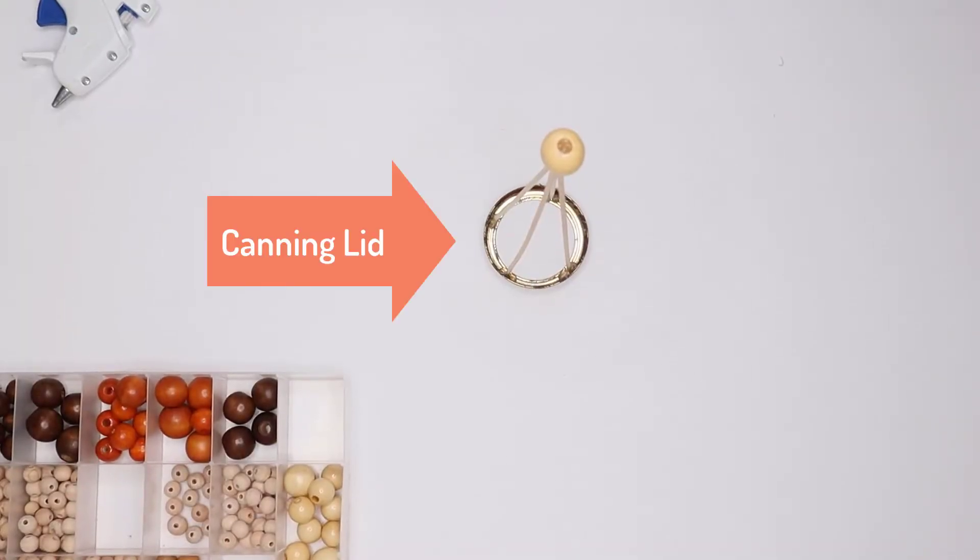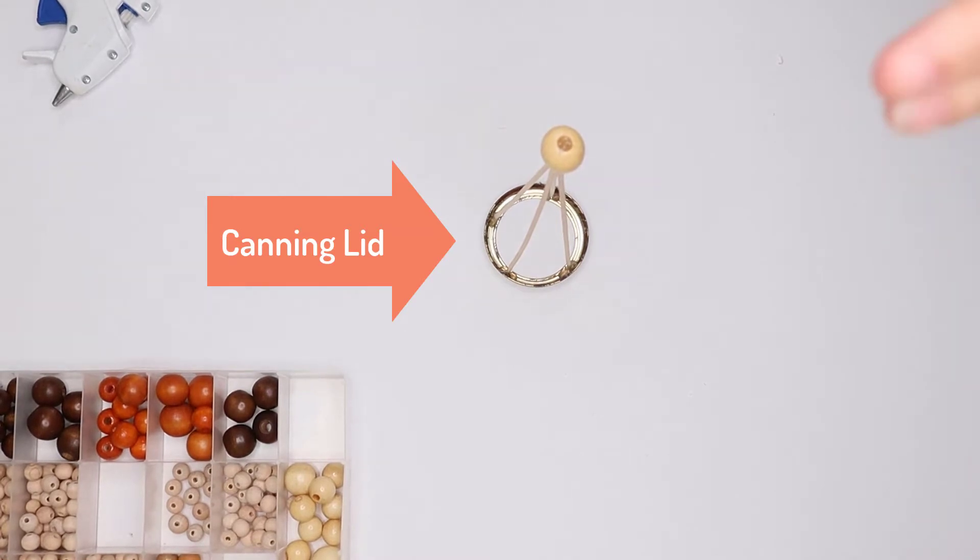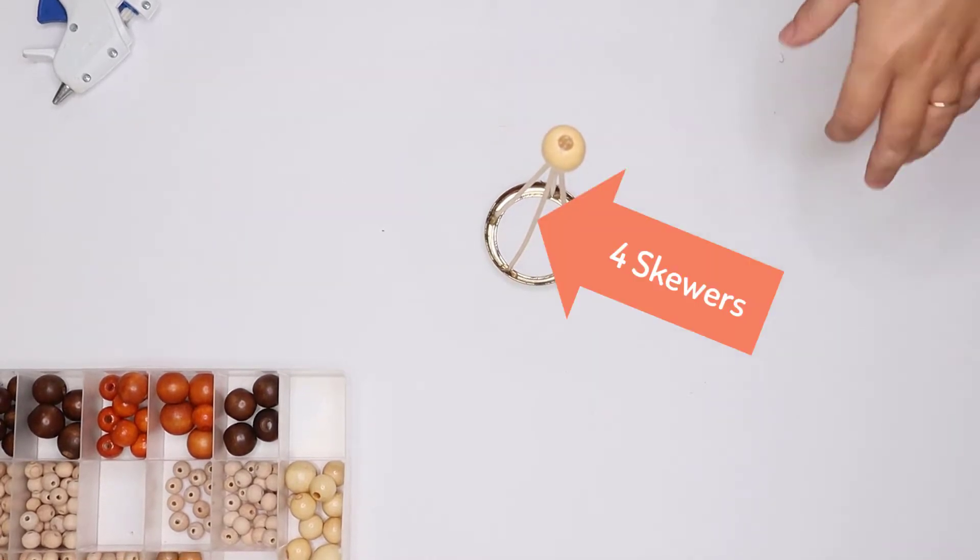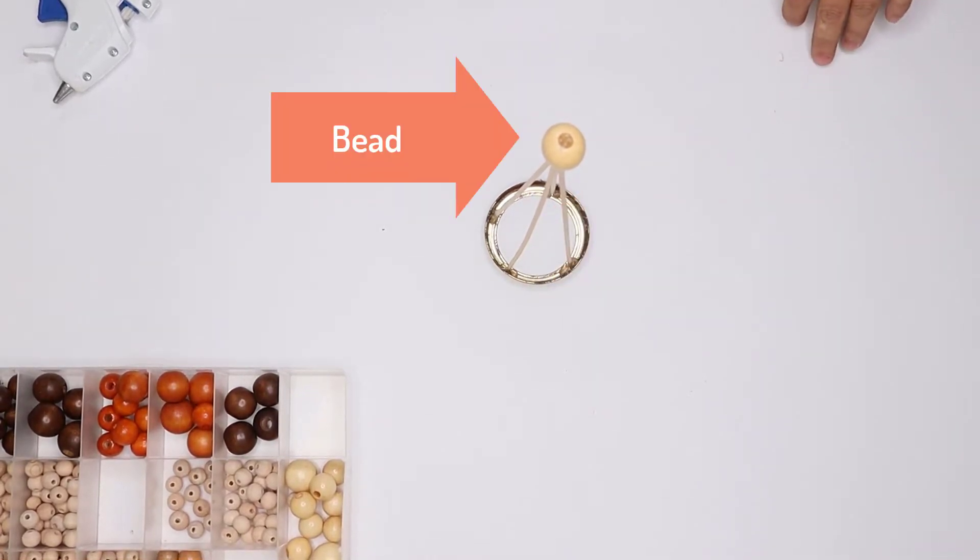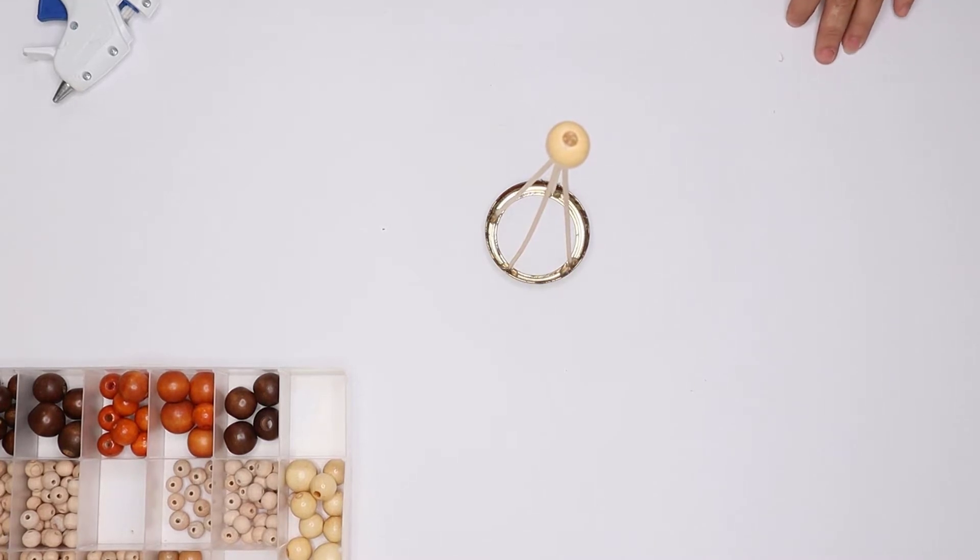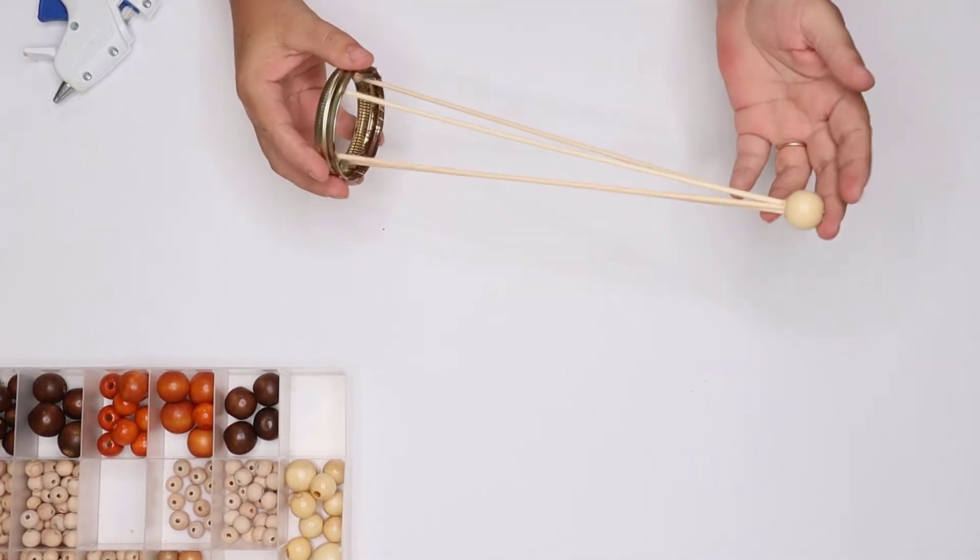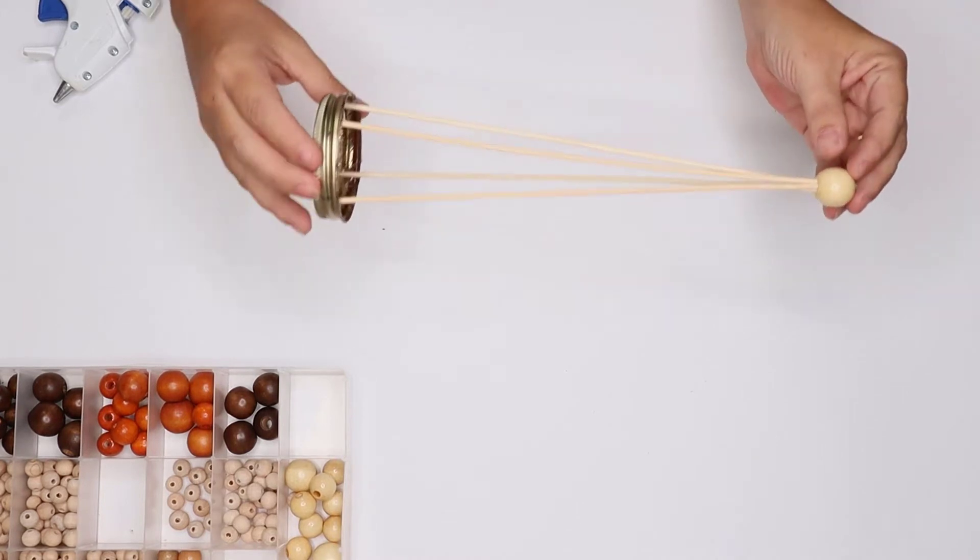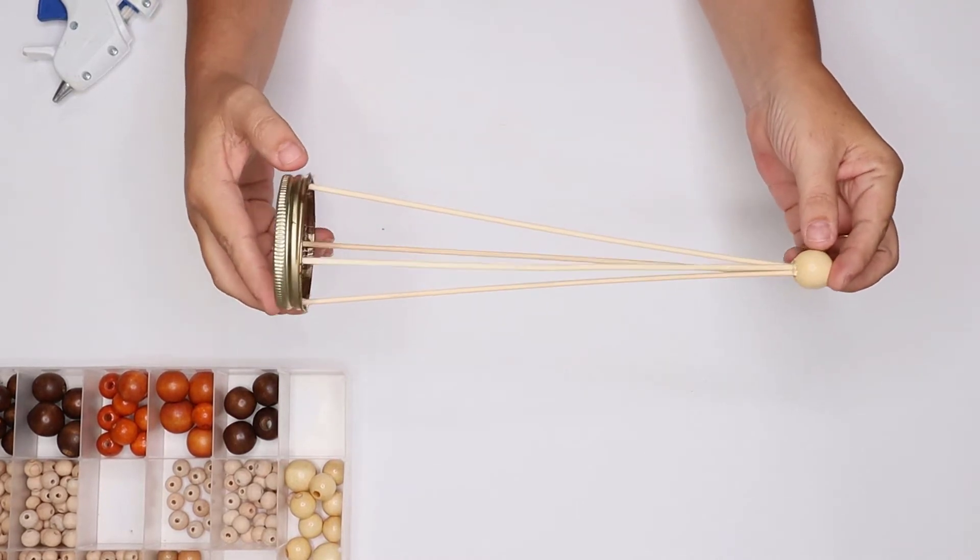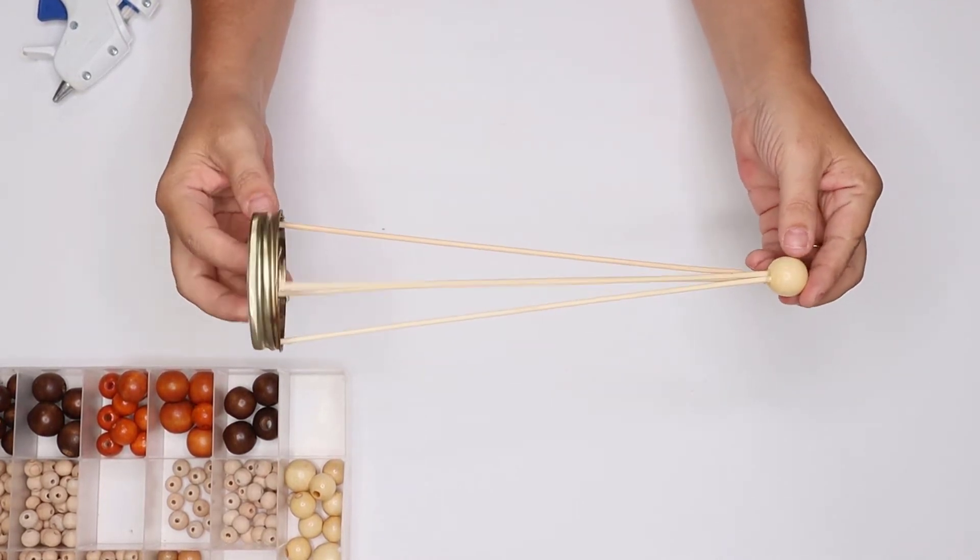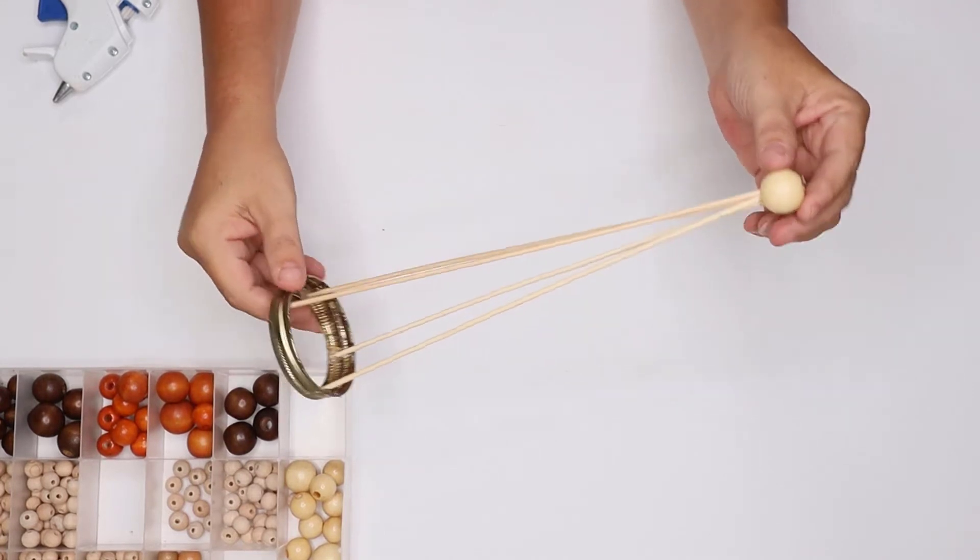You will need a canning lid or something round with edges, four skewers from Dollar Tree, a bead that the skewers will all fit in, and of course a hot glue gun and sticks. The first thing I did was to hot glue all four skewers into the bead at the top, then I just pulled the skewers to the side and glued them around the lid.